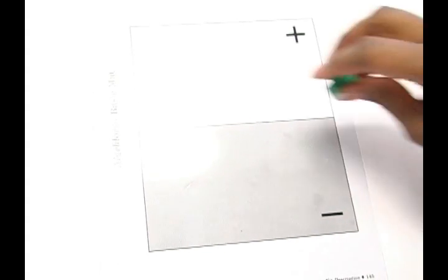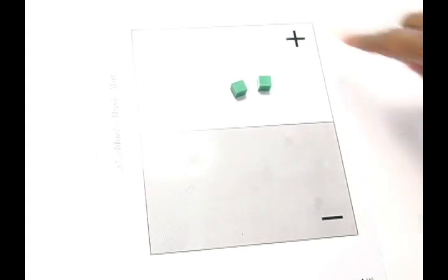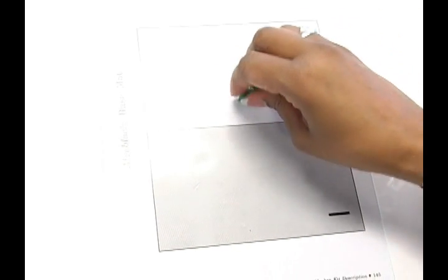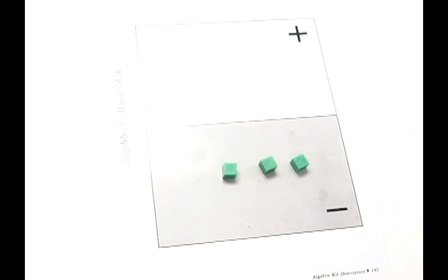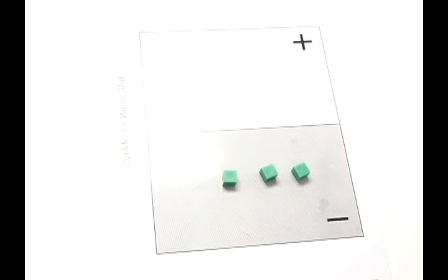We can use the mat to model integers. The two green units are in the positive region, so those two green units represent a positive 2. These three green units are in the negative region, so they represent a negative 3.